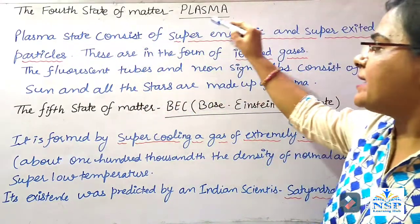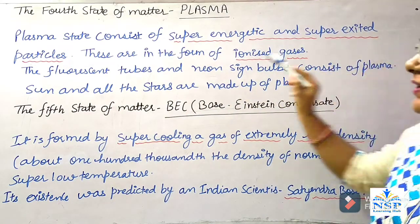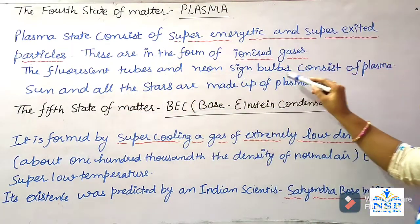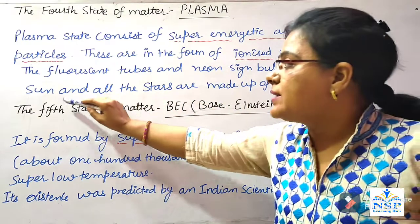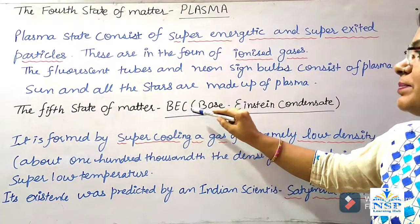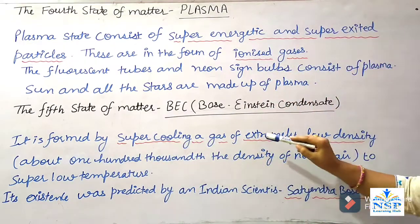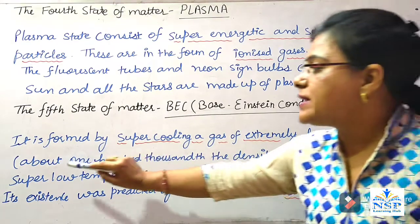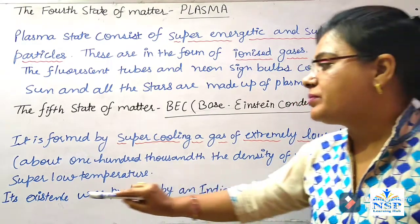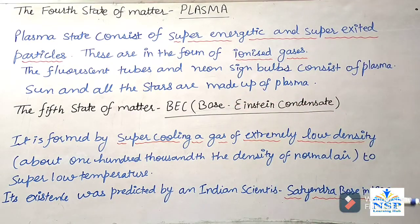The fourth state of matter is plasma. Plasma consists of super energetic and super excited particles in the form of ionized gases. Fluorescent tubes, neon bulbs consist of plasma. The sun and all stars are made up of plasma. The fifth state of matter is Bose-Einstein condensate, formed by super-cooling of a gas of extremely low density — about 100,000th of the density of normal air — to super-low temperature. Its existence was predicted by Indian scientist Satyendra Bose in 1920.